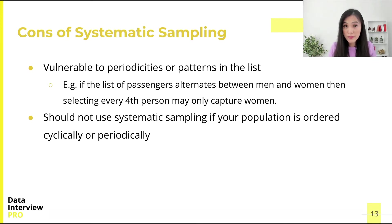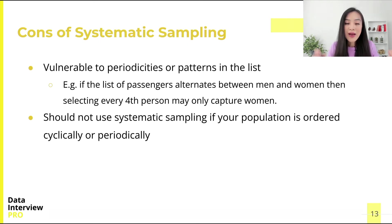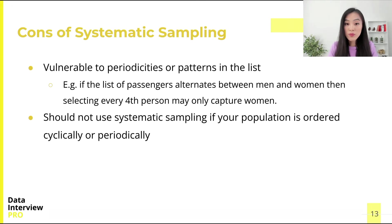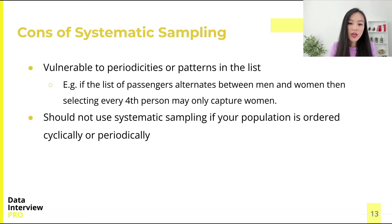However, there are some drawbacks to this method. One drawback is that it is vulnerable to periodicities or patterns in the list. For instance, if the list of passengers alternates between men and women, then selecting every first person may only capture women. So the ordering of the list is important.